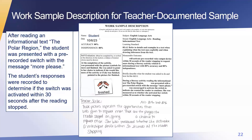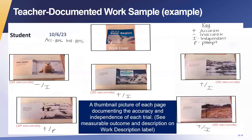Is this what you expected to see? The thumbnail pictures of each page document the accuracy and independence of each trial. You can see the measurable outcome and work description label. There's the book cover, and then the first picture — 35 seconds — so that didn't meet the criteria. She was not correct, but she was independent. On the second page — 20 seconds — accurate and independent. So you can see how this was done.